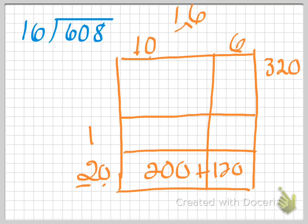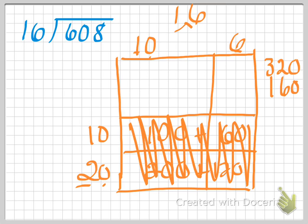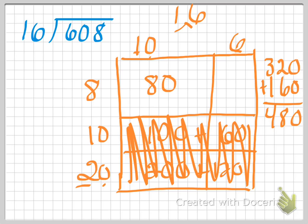10 times 10 is 100, and 10 times 6 is 60. So 100 plus 60 is 160. Adding this section together: 320 plus 160 is 480. I'm not quite there. But if I added another 10, that would be too much. So let me try a number smaller than 10 — why don't I try 8. 10 times 8 is 80, and 8 times 6 is 48. So I have 80 plus 48, which is 128.